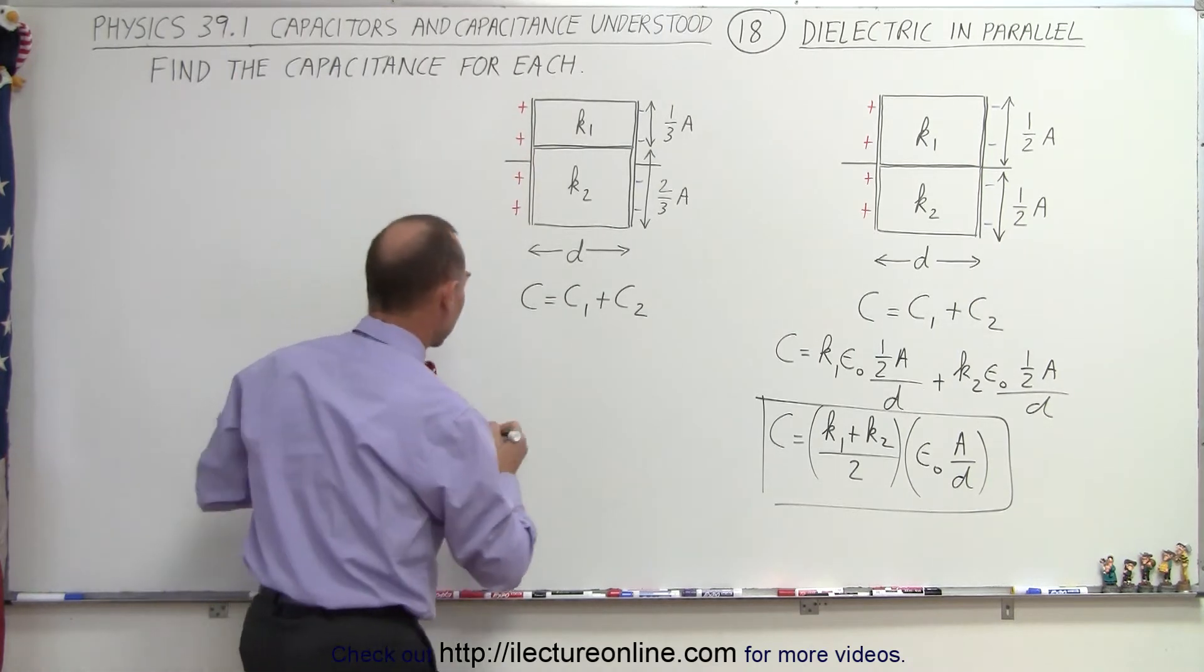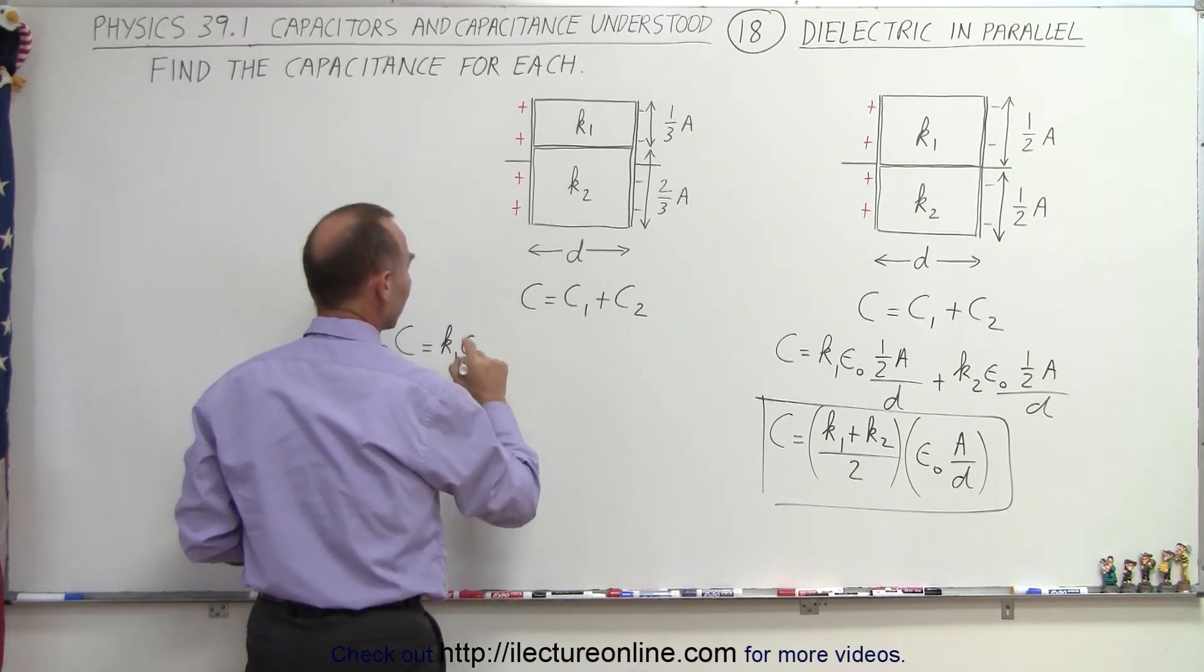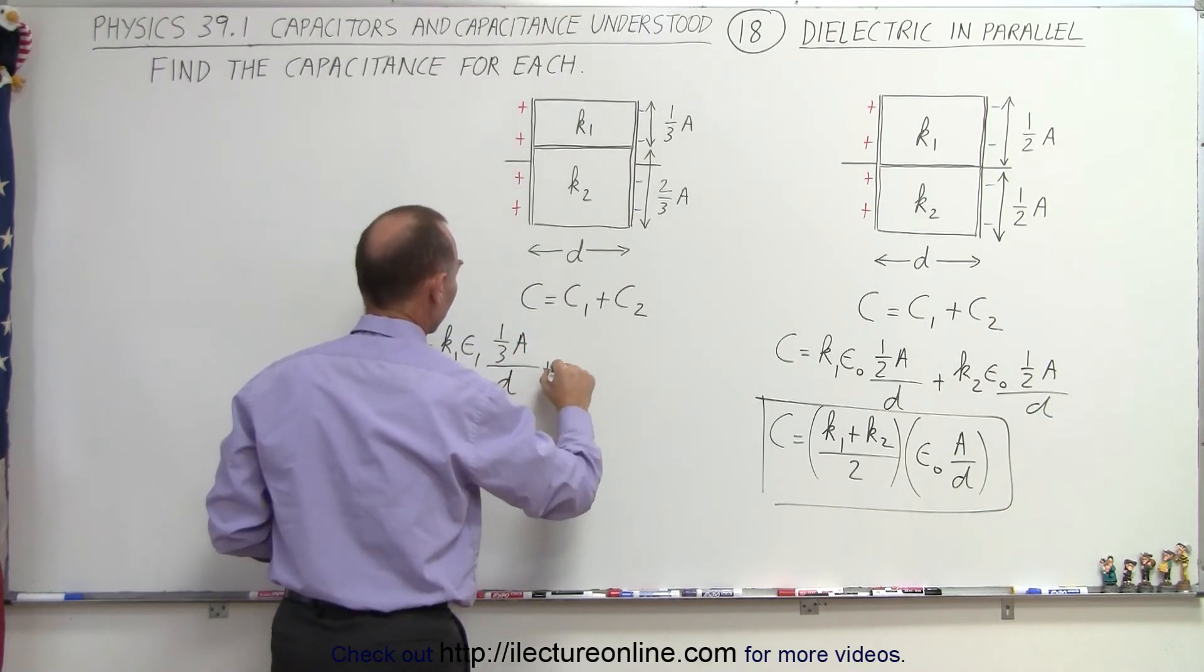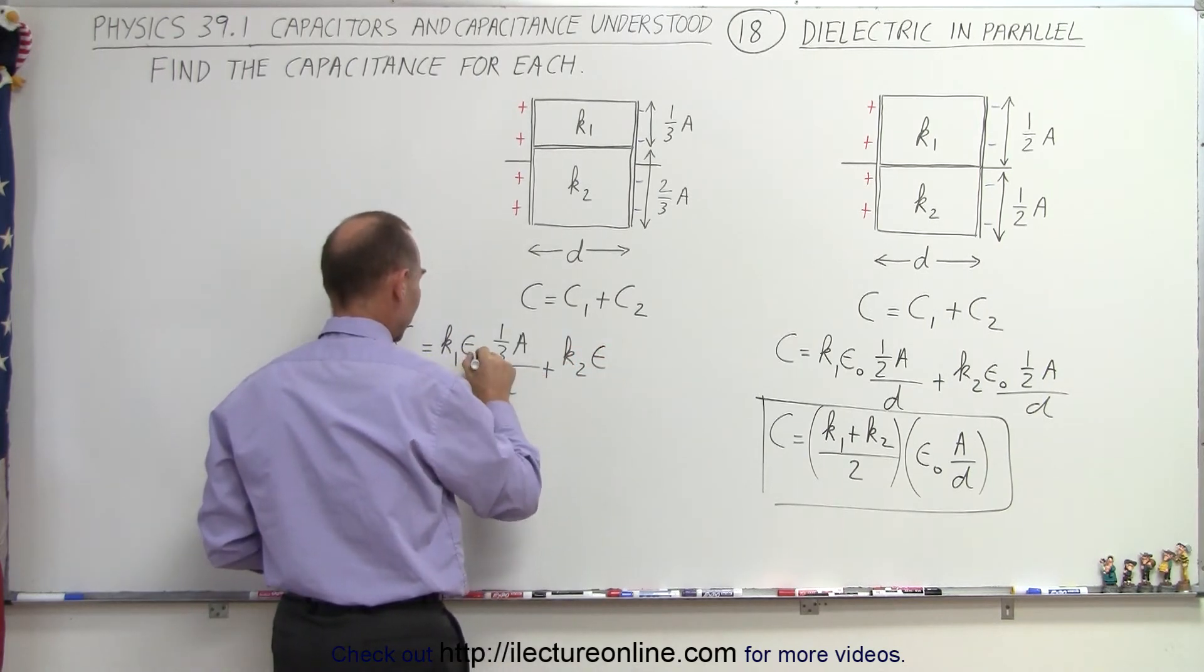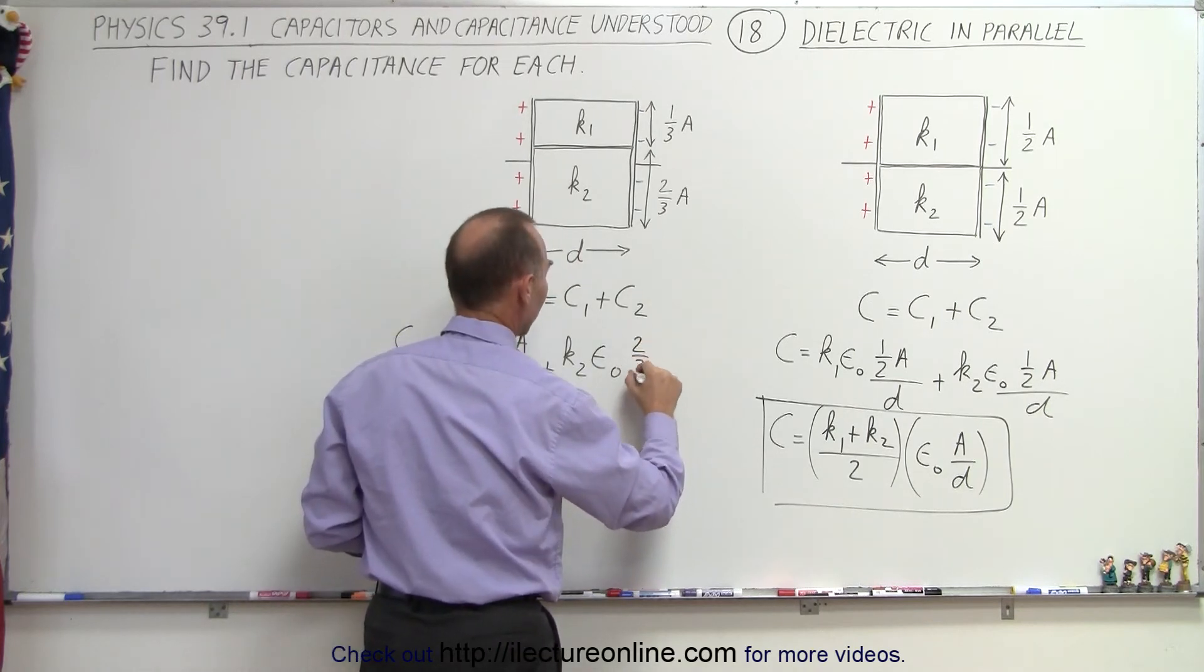So let's see what happens there. Again we're going to add up the two pieces algebraically, so this is equal to k1 epsilon sub naught, now the area is only one-third so it's one over three a divided by the distance, plus k2 epsilon sub naught times two-thirds a divided by d.